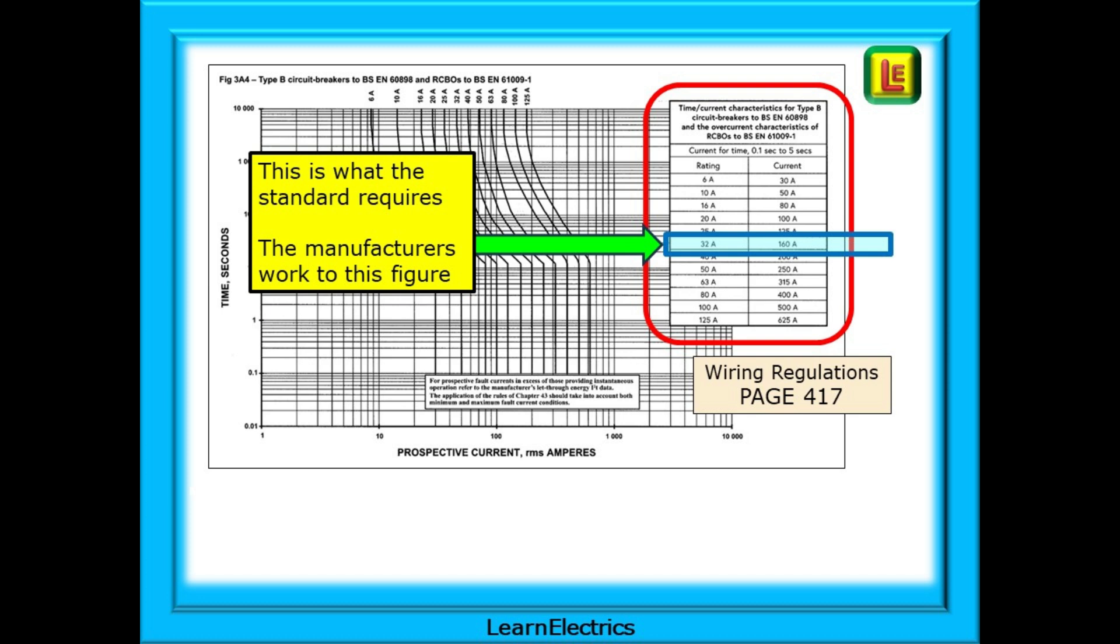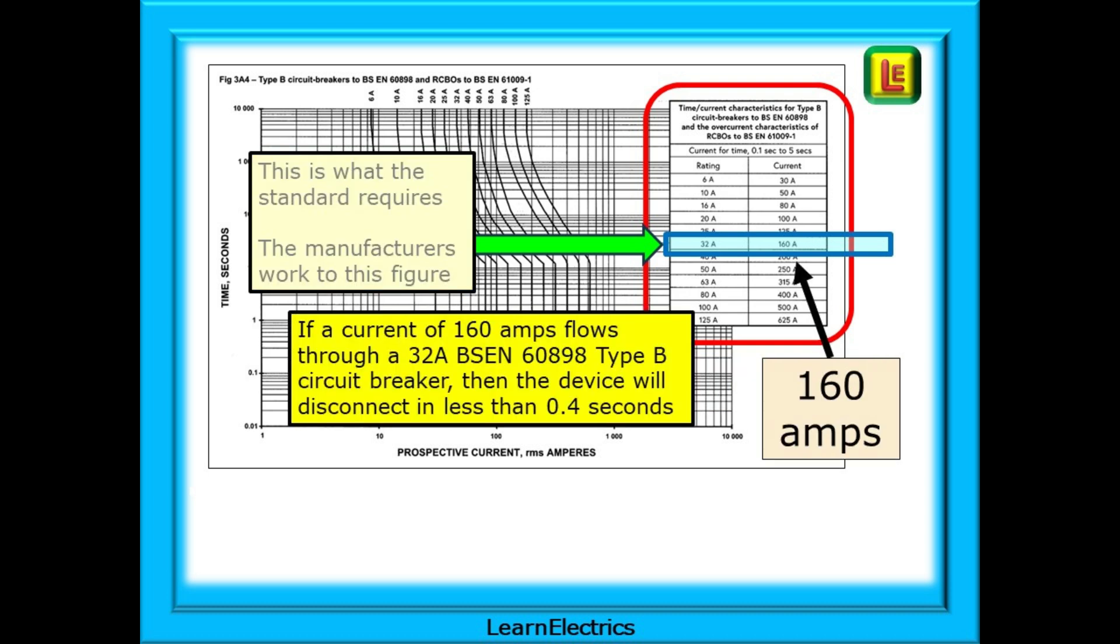This is the requirement that manufacturers will make circuit breakers to, how they design them. This is the starting point for calculating ZS. If a current of 160 amps flows through a 32 amp BS EN 60898 type B circuit breaker then the device will disconnect in less than 0.4 seconds.